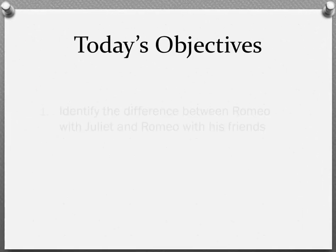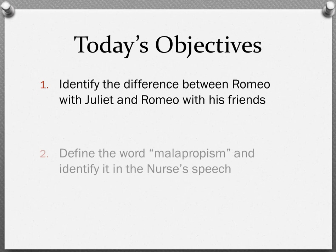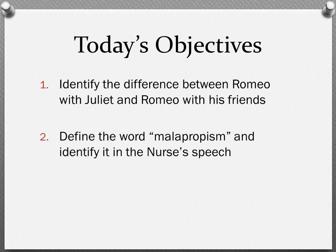Our objectives were to identify the difference between Romeo with Juliet and Romeo with his friends — we'll see what that means in a second — and to define the word malapropism and identify one in the nurse's speech.